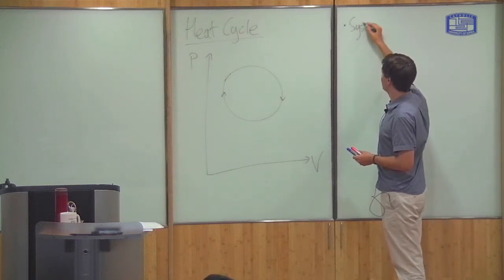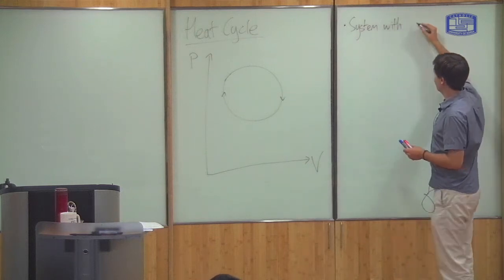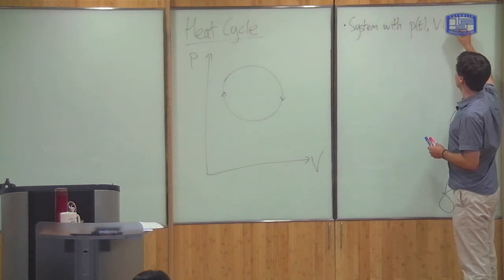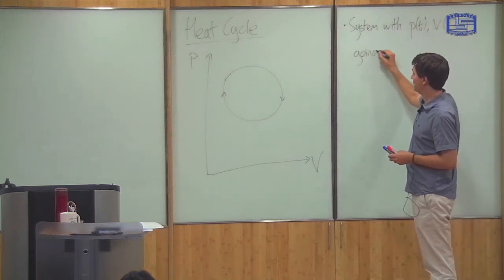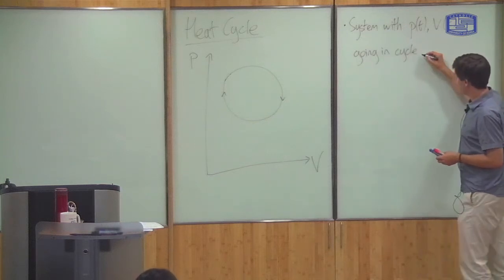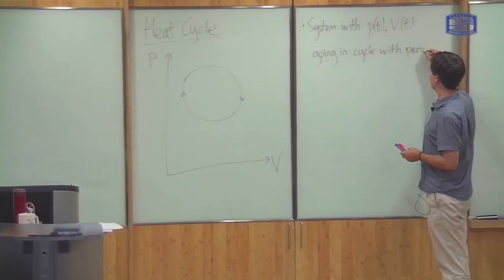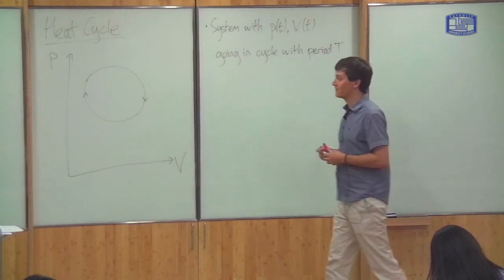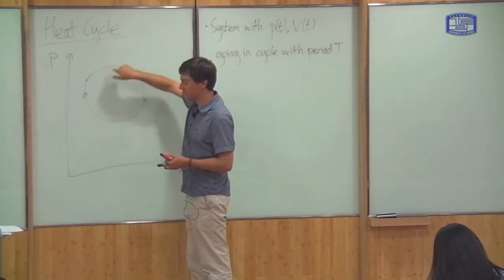You've got a system with pressure and volume as a function of time, going in a cycle with some time period. As the wheel goes round and round, the pressure and the volume of the gas go round and round as well.